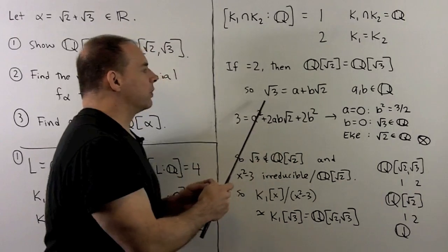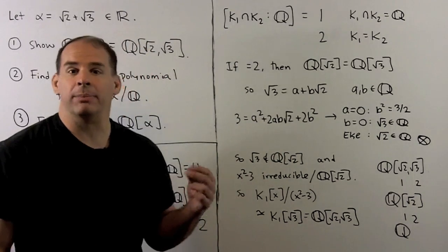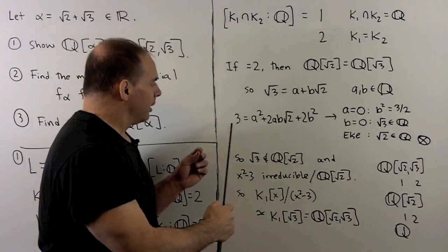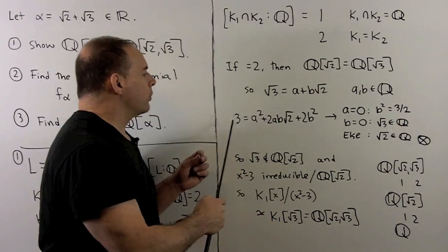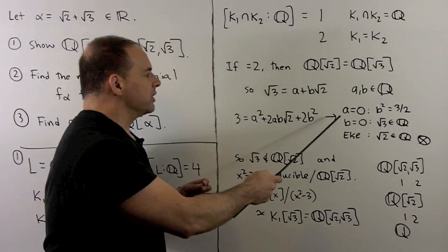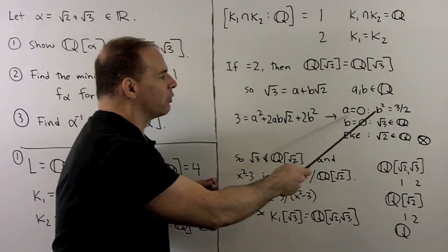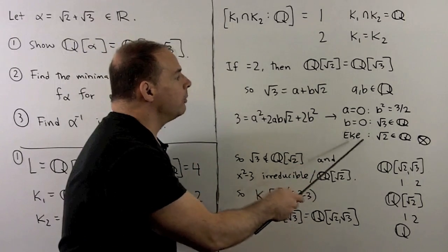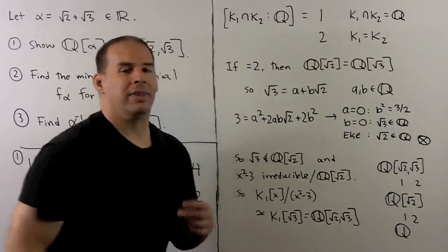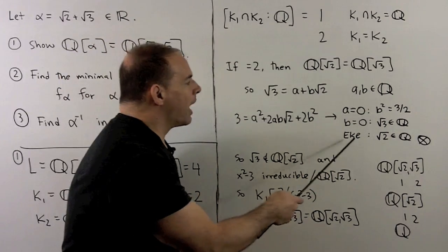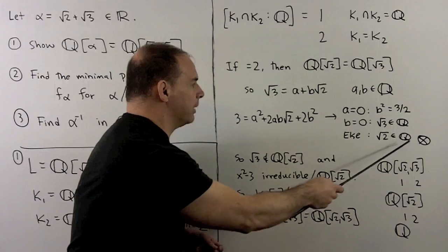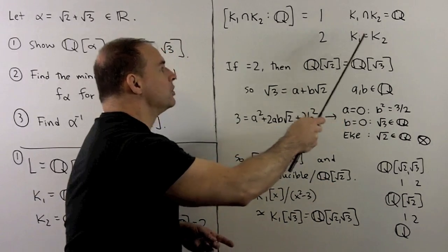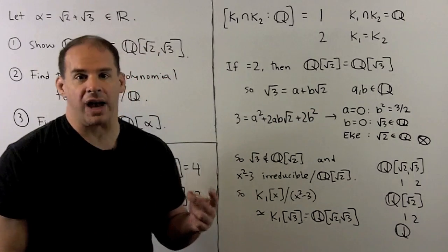If we have ℚ adjoined square root of 2 equal to ℚ adjoined square root of 3, then I can write square root of 3 as a + b√2, where a and b are rational. If I square both sides, we get this equation, and then we can go through each case. If a = 0, then I can write 3/2 as the square of a rational — that can't happen. If b = 0, then square root of 3 is rational — that can't happen. Otherwise, we'll have square root of 2 in the rationals — that can't happen either. So the second possibility is not an option, and the intersection of K1 and K2 is equal to the rationals.